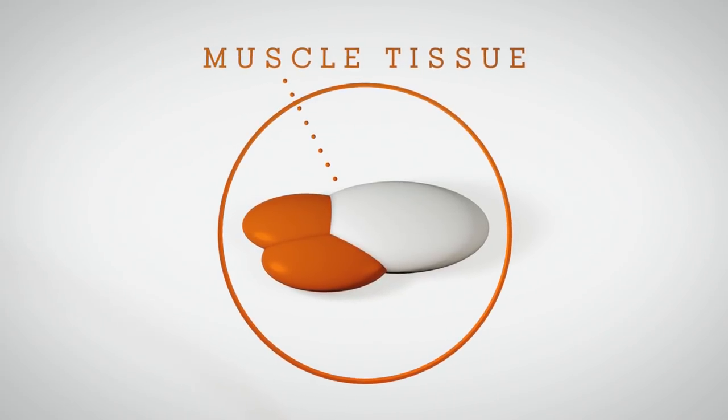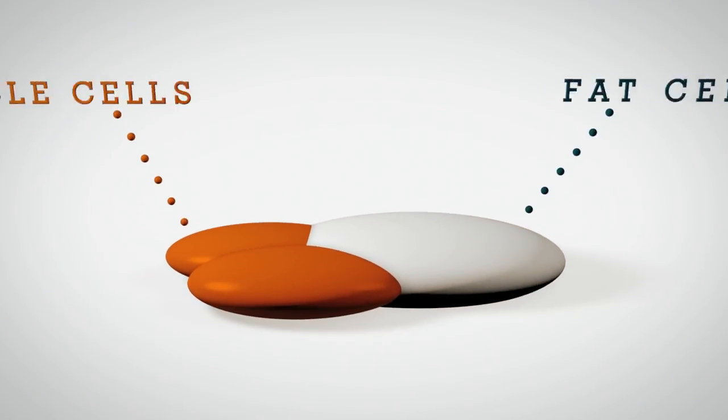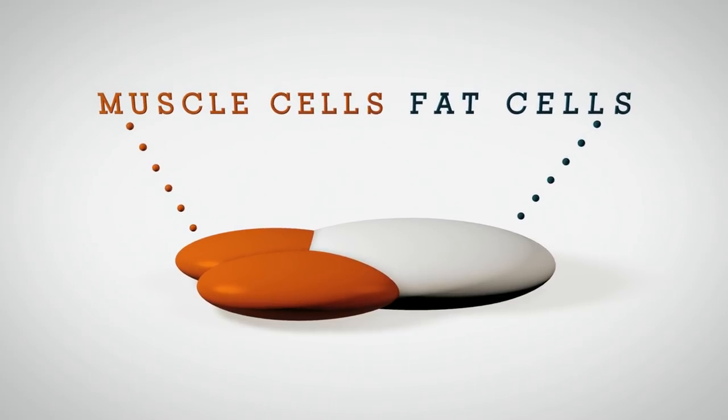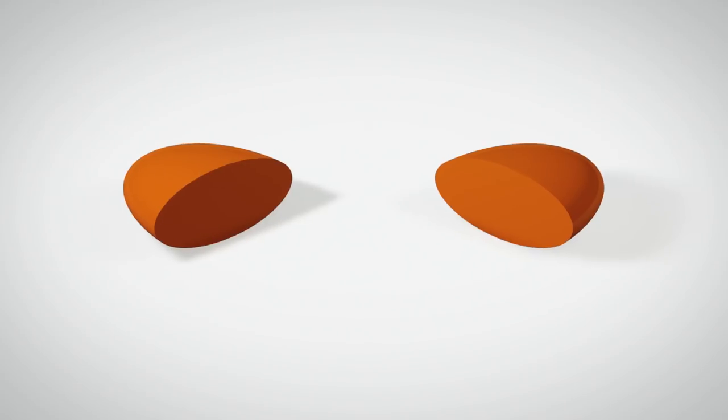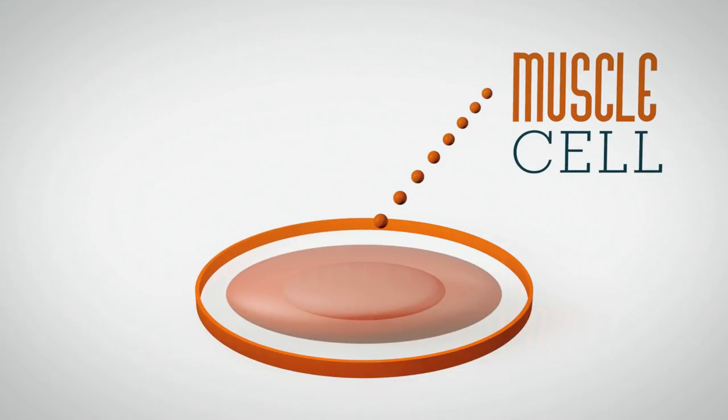The muscle tissue consists of fat cells and muscle cells, which are separated to produce cultured beef. By dissecting the muscle cells, individual cells can be removed and cultured.